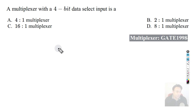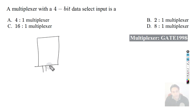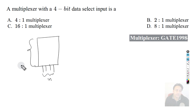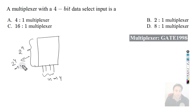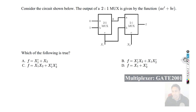Next question: a multiplexer with a four-bit data select input — how many inputs will it have? I always say: if the number of select lines is n, the number of inputs is 2 raised to power n. Here n=4, so inputs = 2^4 = 16. It will be a 16x1 multiplexer. Correct answer: option C.